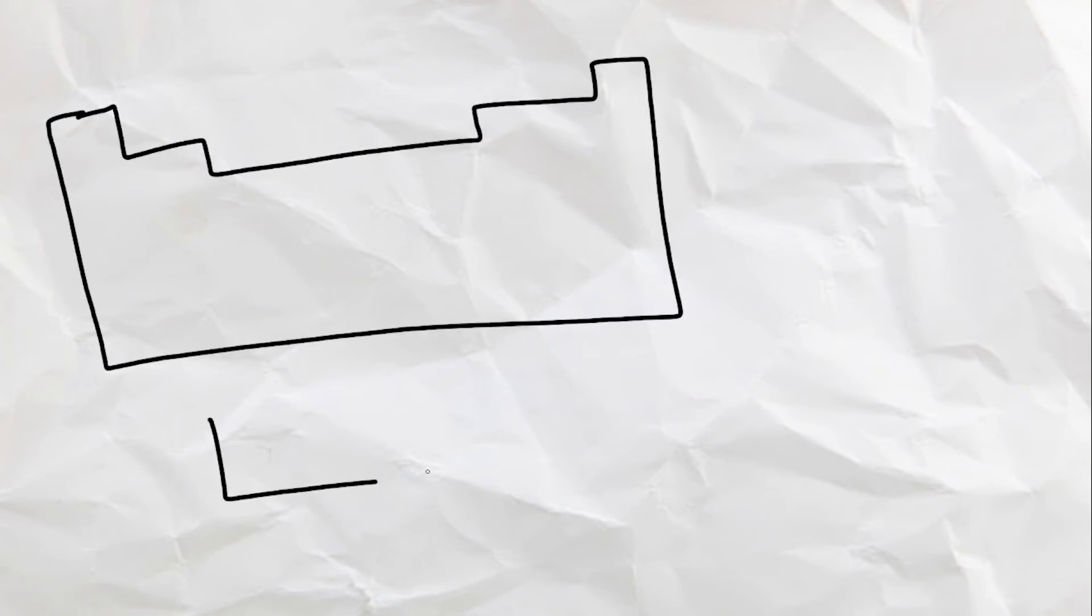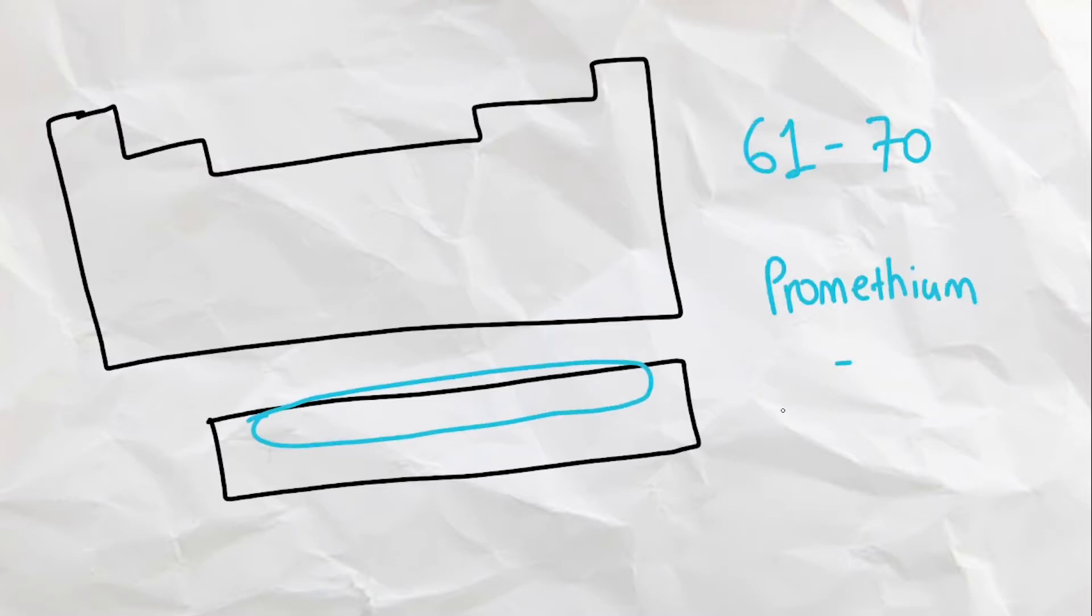Welcome back to the series, where I try to explain every element on the periodic table and show off what they are used for. In this video, we will go over the elements 61 to 70, from Promethium to Ytterbium.